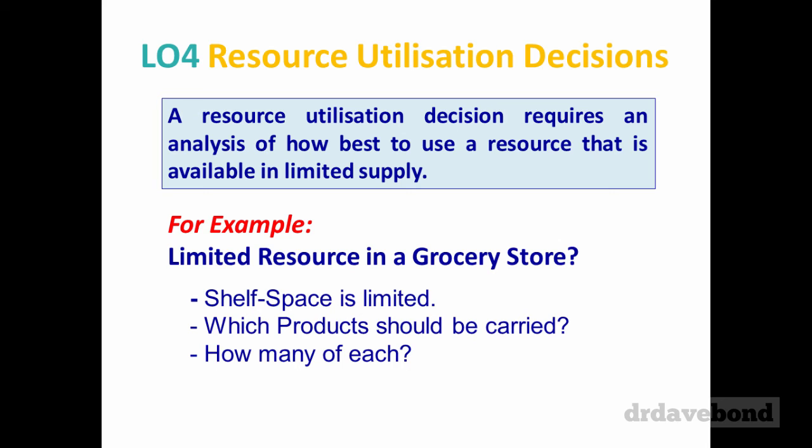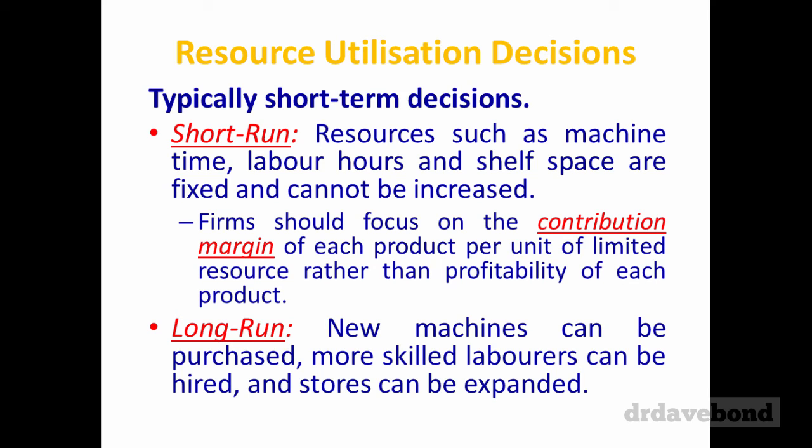A resource utilization decision requires an analysis of how best to use a resource that is in limited supply. We all have limited amounts of time — it's about how we best choose to use it. From a business point of view, what's the most productive way to allocate the products they make? We're looking at fairly short-term decisions because in the longer term you can change the constraints. But you may have limited machine hours, limited shelf space, or limited labor in a certain timeframe.